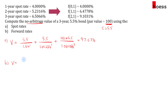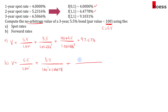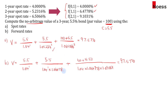Using forward rates, year one's coupon of 5.50 is discounted at 1.04. Year two's coupon of 5.50 is discounted by 1.04 × 1.064778. Year three's cash flow of 105.50 is discounted by 1.04 × 1.064778 × 1.091031. Summing these also gives 97.5770 — confirming that whether you use spot rates or one-year forward rates, you get the same no-arbitrage bond value.